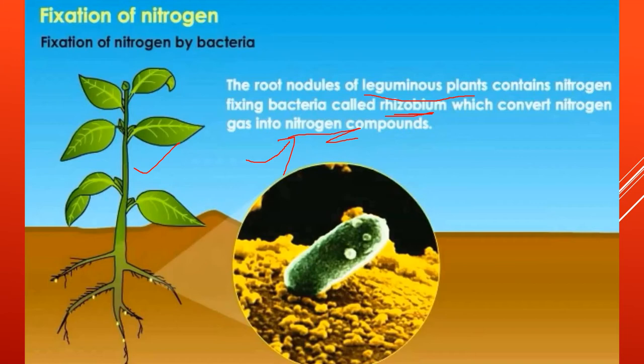Plants lack the capacity to absorb nitrogen directly from the air, so they must get nitrogen for making proteins from somewhere else. Leguminous plants contain rhizobium bacteria, also called nitrogen-fixing bacteria, that help convert the nitrogen present in the air into nitrogen compounds so that plants can easily absorb nitrogen from the soil. You have already learned this in class 7.